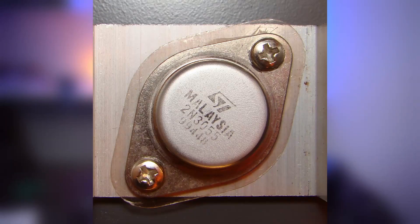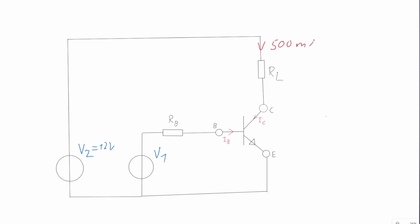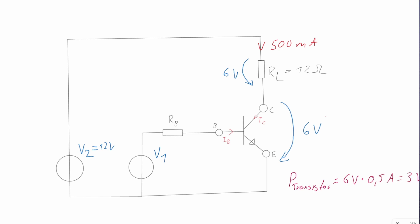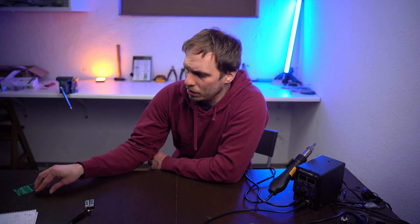The reason we don't use transistors that way today is high power dissipation: we have a voltage drop and the load current through the transistor, which heats up the device and forces us to use large housings. Today we just use it as a switch — turning it on and off — and this gives us those small sweet housings.